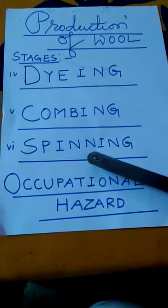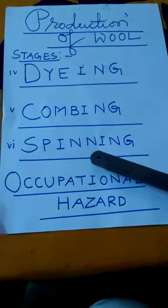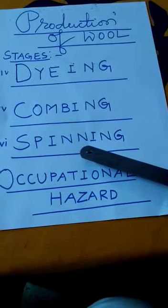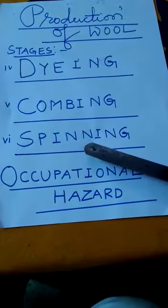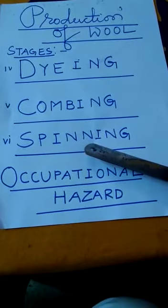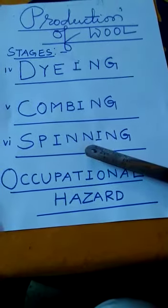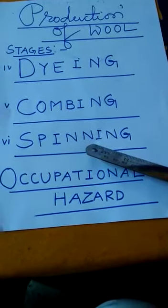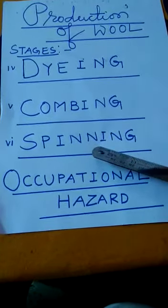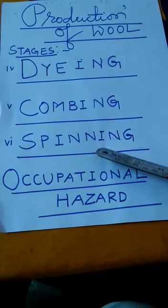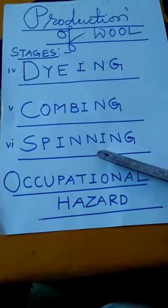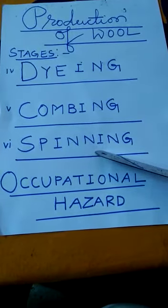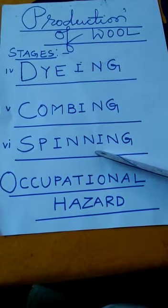So, we conclude that the sheep's hair is sheared off from the body, scoured, sorted, dyed, combed, and spun to obtain wool and woolen yarn. The quality of woolen cloth depends on the breed of sheep from which wool is obtained.